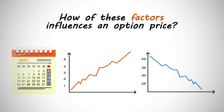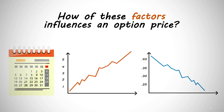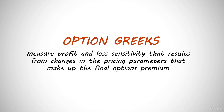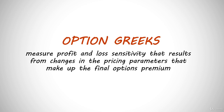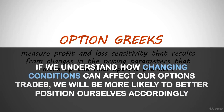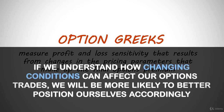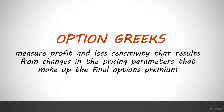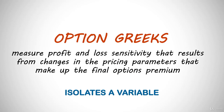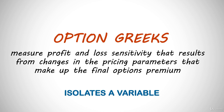As we saw in the previous lesson, option pricing doesn't necessarily move in conjunction with the price of the stock. Because of this, option traders refer to something called option Greeks, which allows traders to measure profit and loss sensitivity that results from changes in the pricing parameters that make up the final option's premium. Understanding Greeks is important because some Greeks may be working against us while others are simultaneously working for us. If we understand how changing conditions can affect our options trades, we will be more likely to better position ourselves accordingly. Each Greek isolates a variable that can drive option's price movement and provide insight on how the option's premium will be affected if that variable changes.